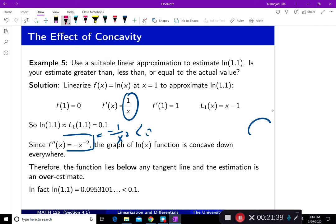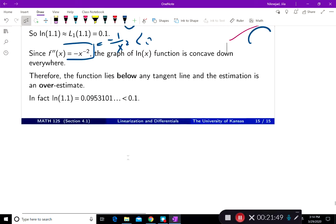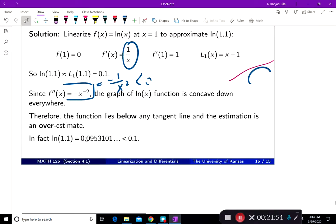Concave down means that the tangent line, the values on the tangent line is an overestimate for the value that we have. And so that tells me about the overestimation. In fact, the value of the natural log of 1.1 is given here, and it's slightly less than what we found.